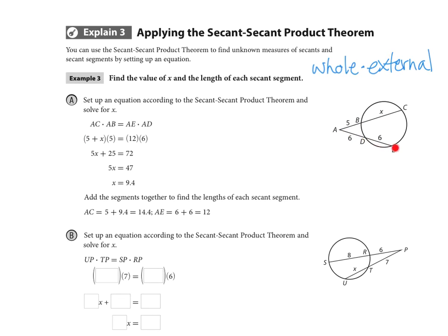is going to be equal to on the other side. Again, the whole length. We need to take into account 6 plus 6 for the two pieces together. So the whole thing times just the outside piece. And then we just have algebra really to solve from that point on you guys. So 5X plus 25 when I just distribute that 5 through and subtract 25 we get 47 and divide by 5 we get 9.4. Then we're going to find the total length of each segment. We're going to do 5 plus the 9.4 so 14.4 and 6 plus 6 as we know already is 12. So that's the idea of the secant-secant product theorem.